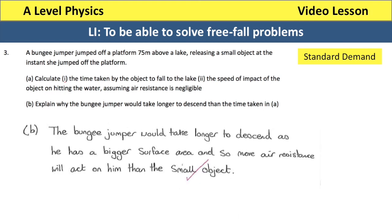Part B was to explain why the bungee jumper would take longer to descend than the time found in part A. The reason is that the bungee jumper has a larger surface area than the small object, so the air resistance acting on them will be greater, and therefore the acceleration will be less.